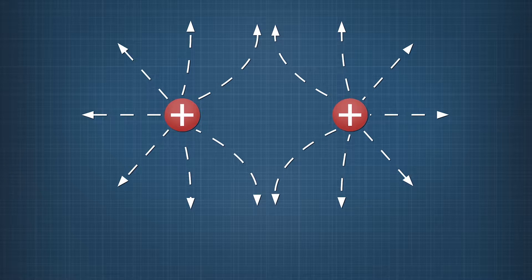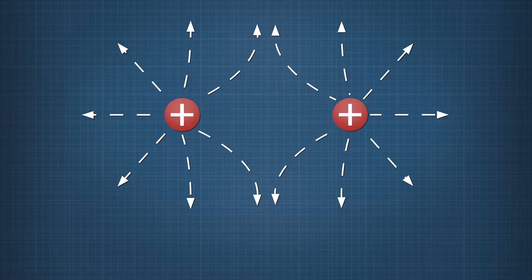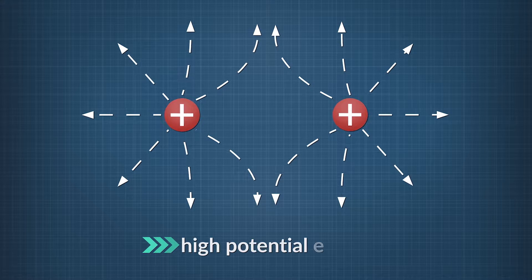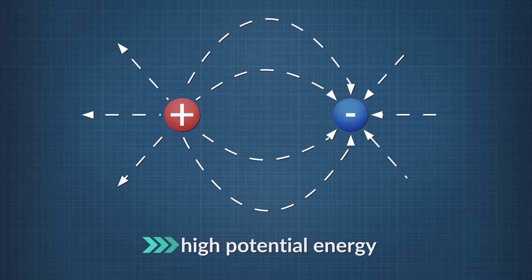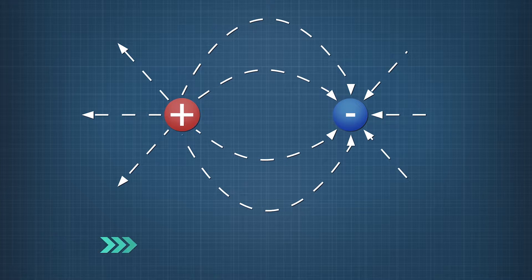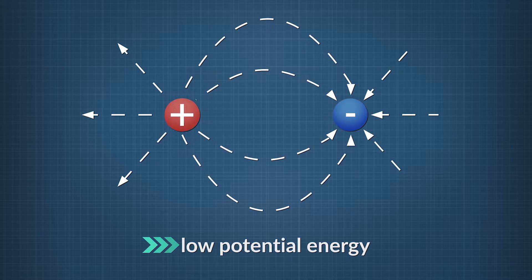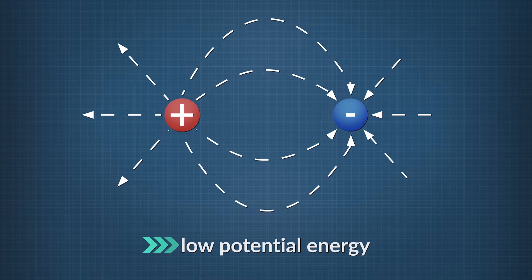A positive charge near another positive charge has high potential energy. A positive charge near a negative charge has low potential energy.